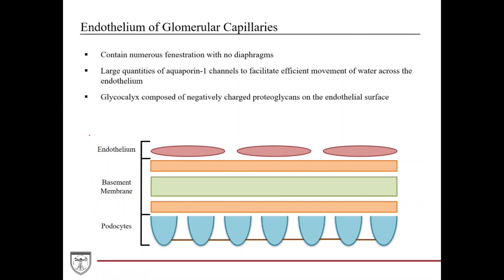The endothelium of the glomerular capillaries contains numerous fenestrations, and they don't have any diaphragms covering them, making it very easy for blood to move through into the filtration apparatus. It's essentially a first filter with a bunch of different holes in it. There are also wide gaps between the endothelial cells to make it easy for fluid to move across, plus a number of aquaporins — water channels — to help the movement of water.